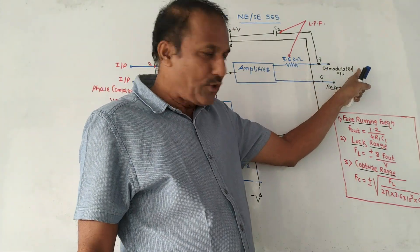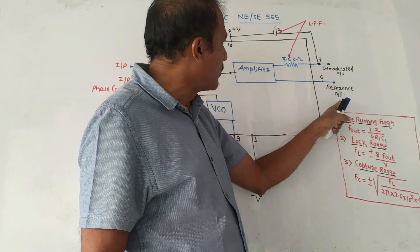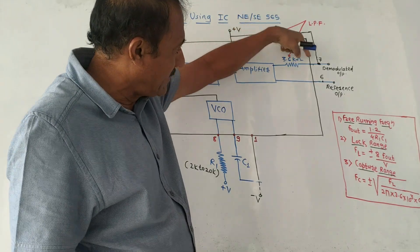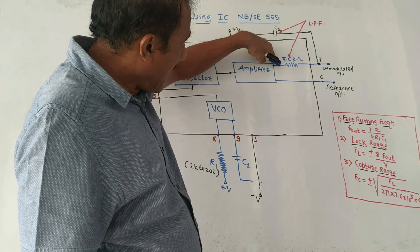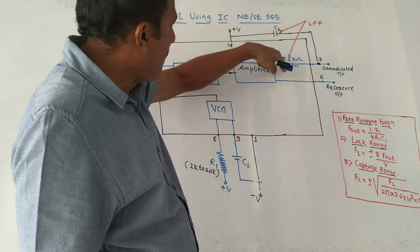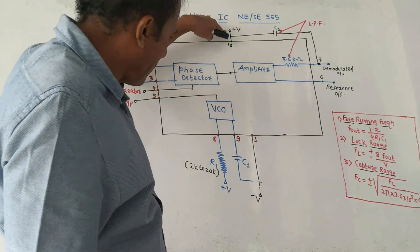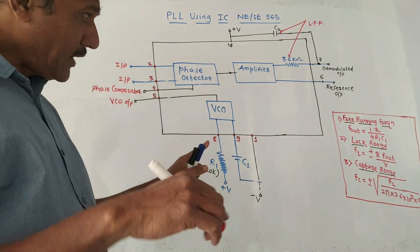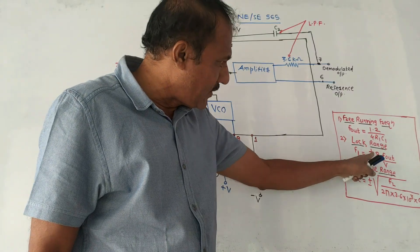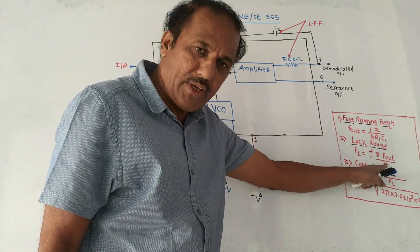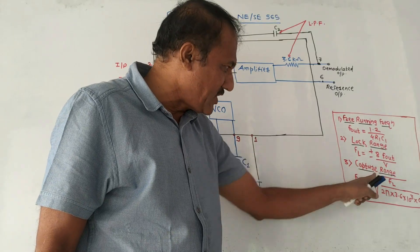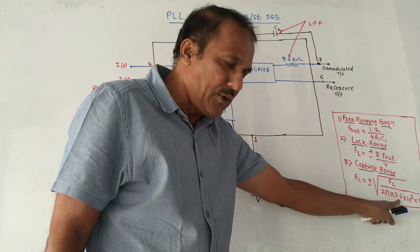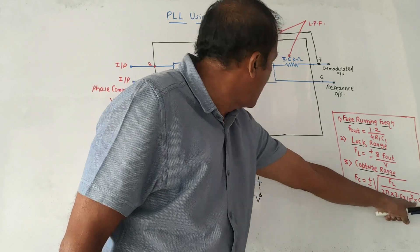Pin number 6 produces the reference output. The 3.6 kΩ resistor connected at the output of the amplifier and to pin number 7, together with capacitor C2, forms the low pass filter. At pin number 10, we apply plus V volts, and at pin number 1, we apply minus V volts. The lock range is given by: F_L = ±8 × F_out / V, where V is the supply voltage. The capture range is given by: F_C = ±√(F_L / (2π × 3.6 × 10³ × C2)).